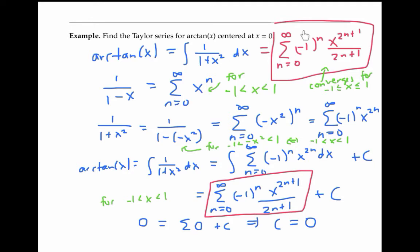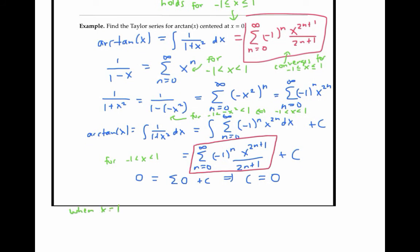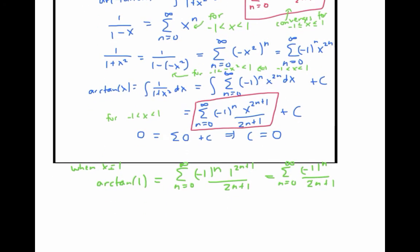So this series converges on the closed interval from negative one to one, and it's equal to arctan on that open interval. In fact, it turns out that it's equal to arctan even on the closed interval. In particular, the equation holds for x equal to one. When x is equal to one, I plug into the equation to get that arctan of one is equal to the sum from n equals zero to infinity of negative one to the n times one to the 2n plus one, which is just one over 2n plus one. Now arctan of one is the angle whose tangent is one, so arctan of one is going to be pi over four. In other words, I now have a series that sums to pi over four.